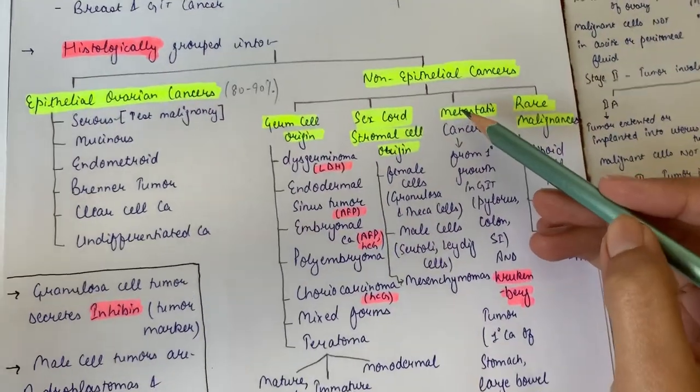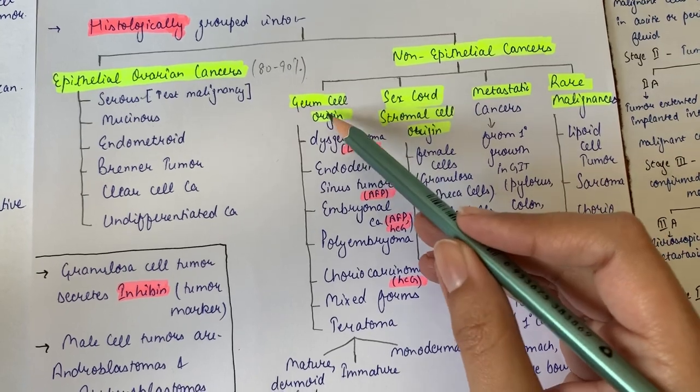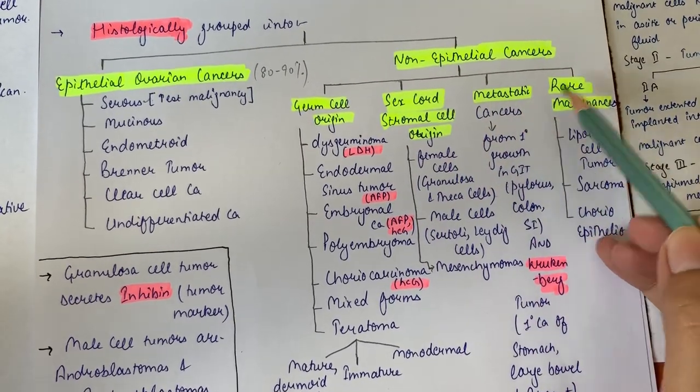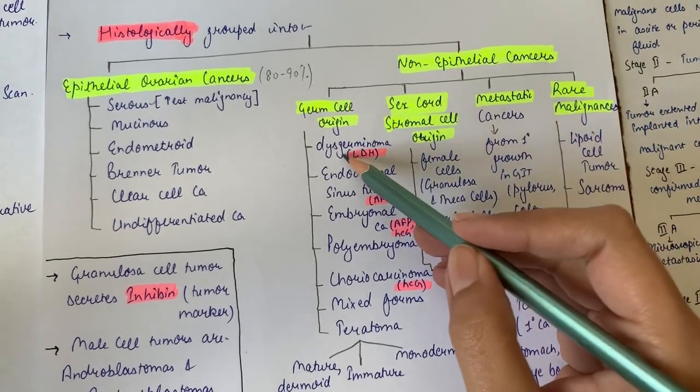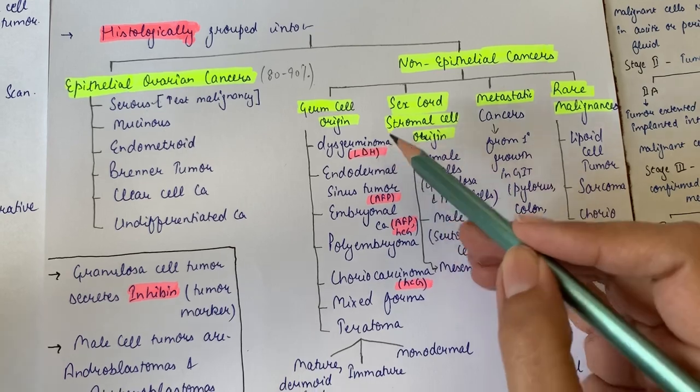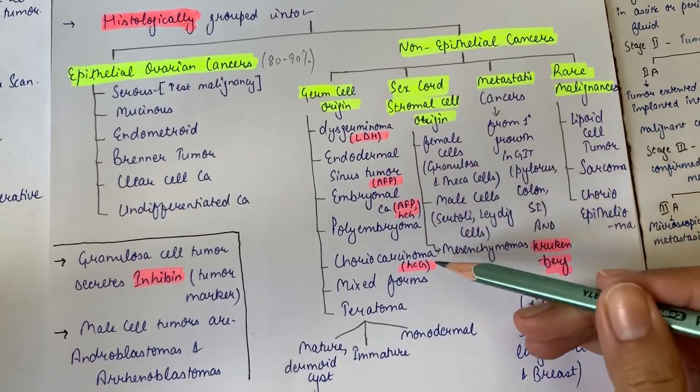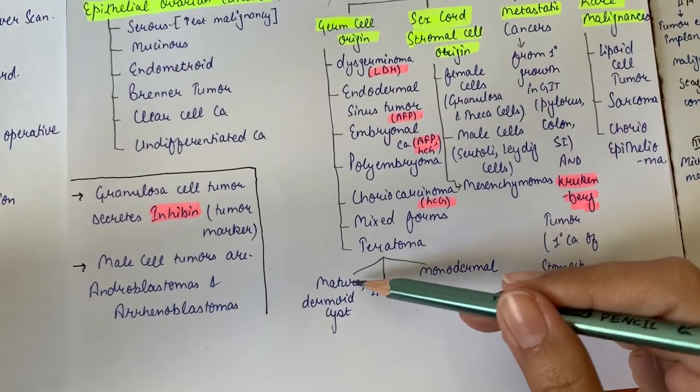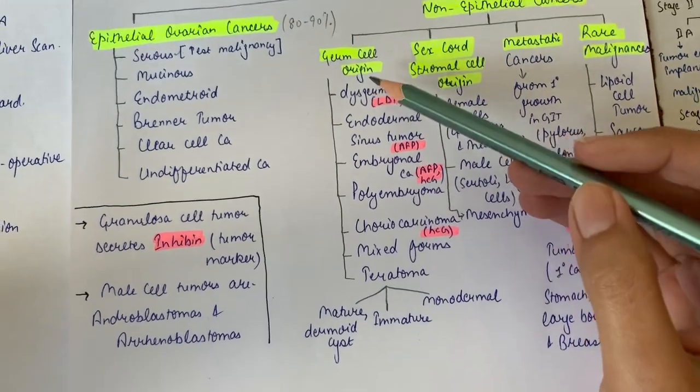Non-epithelial carcinomas can be of germ cell origin, sex cord stromal cell origin, metastatic cancers, and rare malignancies. Germ cell origin carcinomas can be dysgerminoma, endodermal sinus tumor, embryonal carcinoma, polyembryoma, choriocarcinoma, mixed forms, and teratoma that can be mature dermoid cyst, immature, or monodermal.